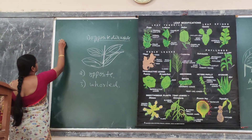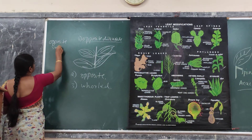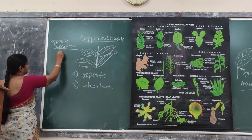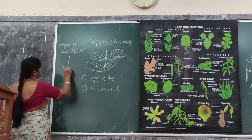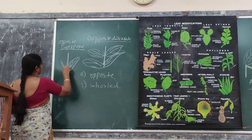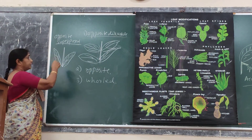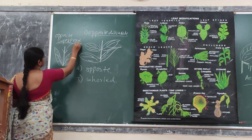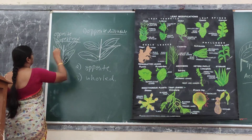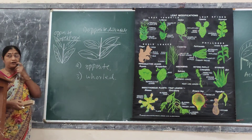Another type is opposite superposed, where a pair of leaves which are in exactly the same direction are arranged one above the other. Such a type is called opposite superposed phyllotaxy.